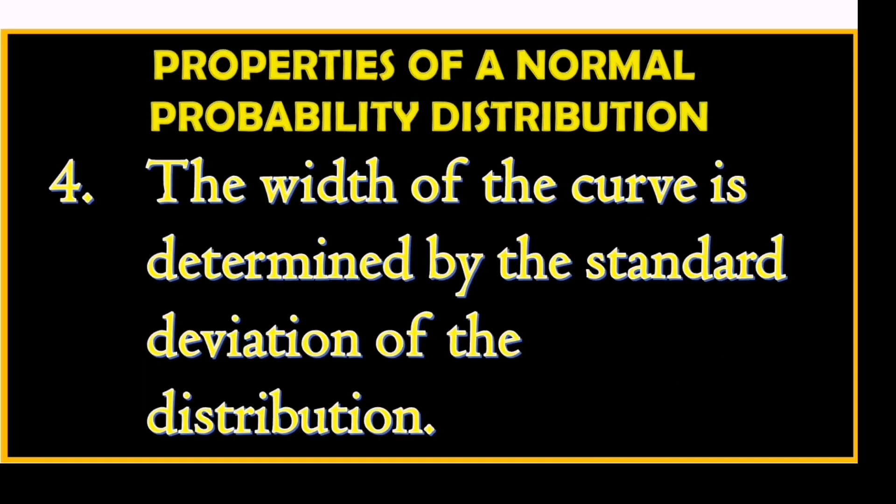Number 5: The width of the curve is determined by the standard deviation of the distribution. A standard normal curve is a normal probability distribution that has a mean value equal to 0 and a standard deviation equal to 1.